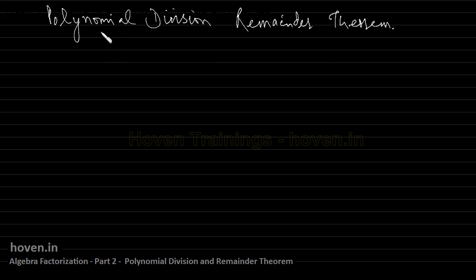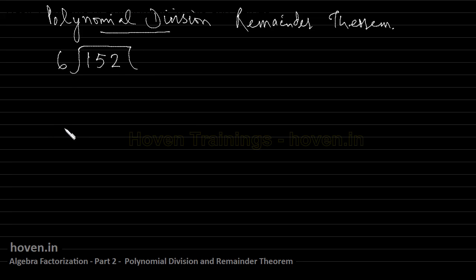We will start with polynomial division. Let us recall how we divide two numbers. Consider the case of 152 being divided by 6. We first of all try to find the highest number that can be formed out of 152. We did not stop at 1 because 1 was less than 6, then we looked at 15, which was greater than 6.